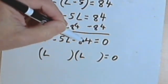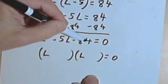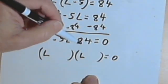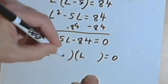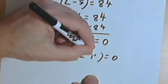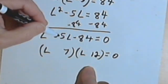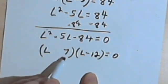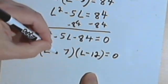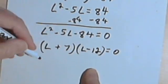So 84 is 1 times 84 or 2 times 42. I can keep thinking through until I get to 7 and 12. 7 times 12 is 84. And since the middle term is negative, I'm going to use a negative sign for the bigger of those two numbers, for the 12. So I've got L plus 7 times L minus 12 equals 0.